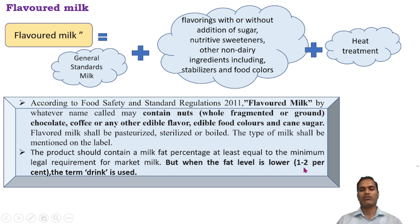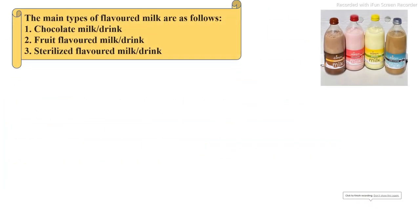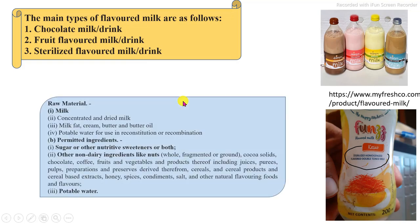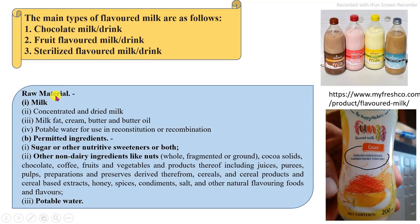If the fat and SNF percentage is maintained below one to two percent, it is called a flavored drink. The main types of flavored milk are: first, chocolate milk or drink, in which cocoa mass or chocolates are added; second, fruit flavored milk or drink, in which fruit-based natural juice or pulp is added; and third, sterile flavored milk, in which artificial flavoring substances are added.